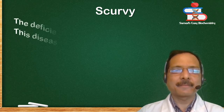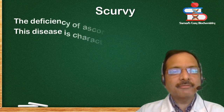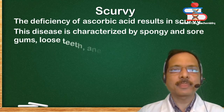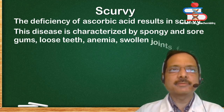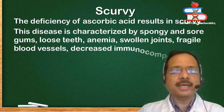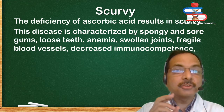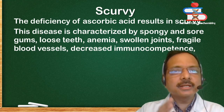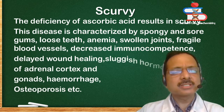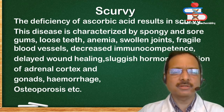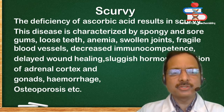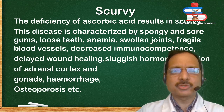Scurvy. The deficiency of ascorbic acid results in scurvy. This disease is characterized by spongy and sore gums, loose teeth, anemia, swollen joints, fragile blood vessels, decreased immunocompetence, delayed wound healing, sluggish hormonal function of the adrenal cortex and adrenal gonads, hemorrhage, osteoporosis, etc.